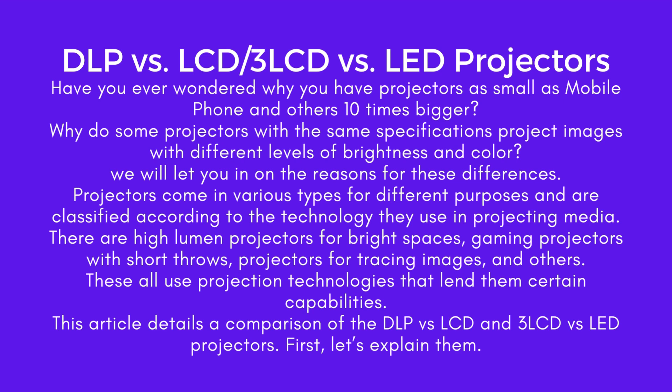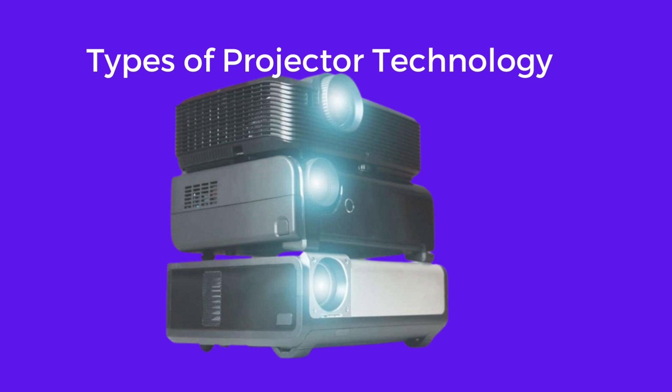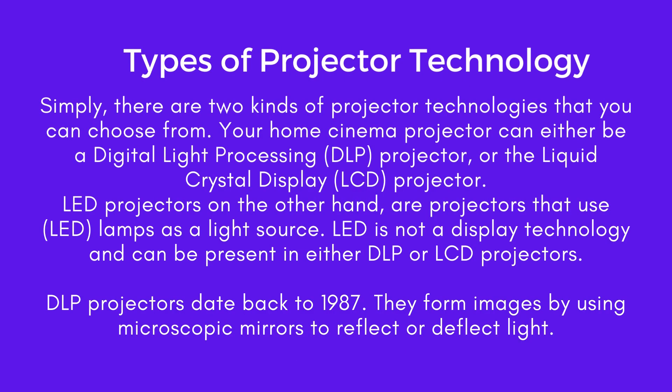First, let's explain the types of projector technology. Simply, there are two kinds of projector technologies you can choose from. Your home cinema projector can either be a Digital Light Processing (DLP) projector or a Liquid Crystal Display (LCD) projector. LED projectors, on the other hand, are projectors that use LED lamps as a light source. LED is not a display technology and can be present in either DLP or LCD projectors.